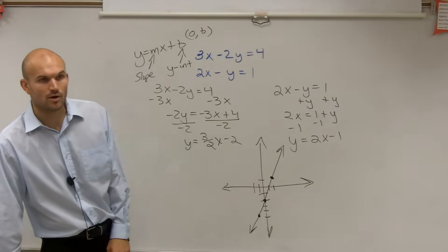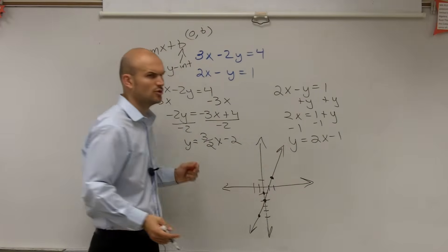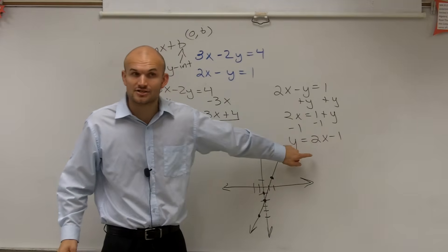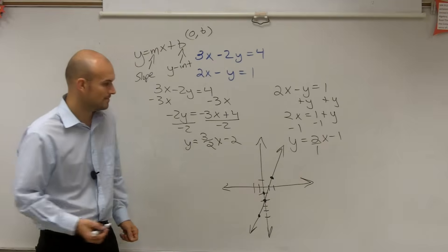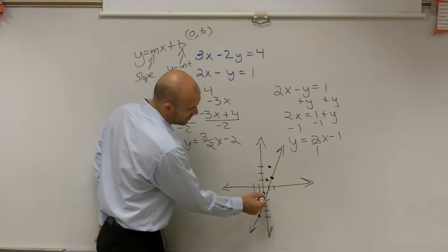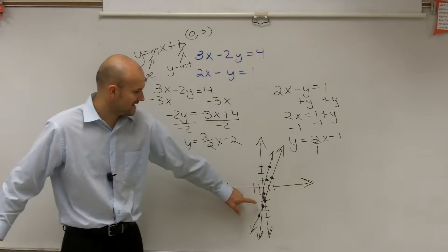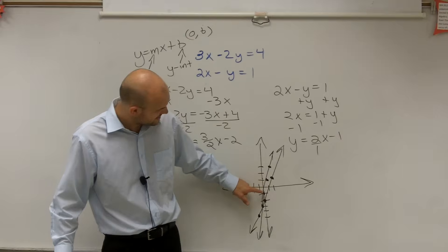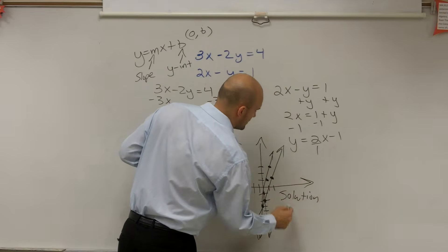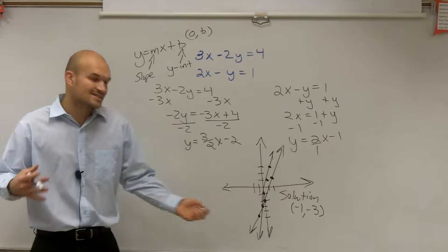The next one says y equals 2x minus 1. So, this one has a y-intercept at negative 1, and my slope is 2. You need to write the slope as a fraction — 2 over 1. So, I'm going to go up 2 over 1. If I also go down 2 to the left 1, we notice that the two graphs intersect at a certain point. So, the solution is at the point negative 1, comma, negative 3, because that is the intersection.